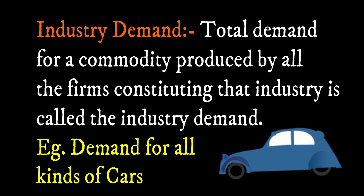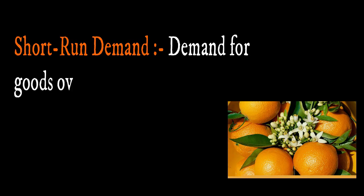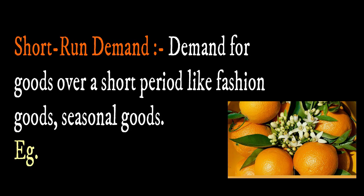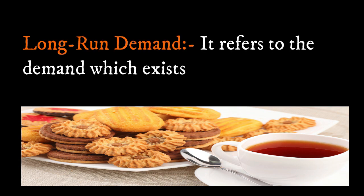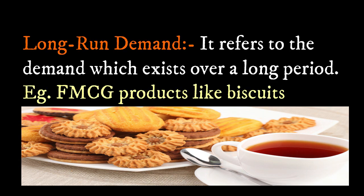An example of industry demand is the demand for all kinds of cars. Short-run Demand refers to demand for goods over a short period, like fashion goods and seasonal goods. Long-run Demand refers to the demand which exists over a long period.